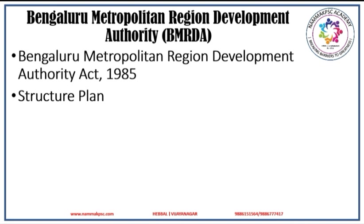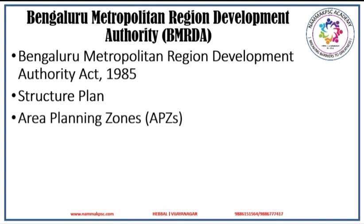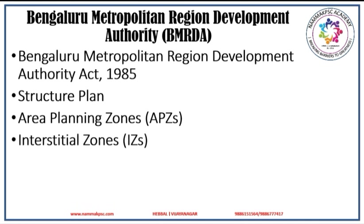As per the structure plan, the areas suitable for urbanization have been categorized as area planning zones. Areas where agriculture is the predominant occupation and forestry is abundant, conservation has been stressed more and such areas have been classified as interstitial zones.